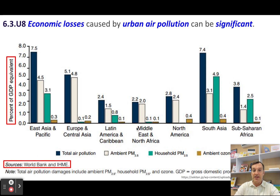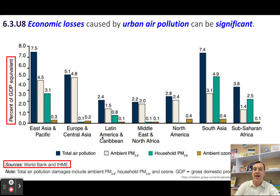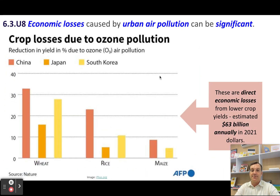The Middle East and North Africa is significantly lower. Latin America and the Caribbean also significantly lower. These are smaller land masses — islands have good horizontal air movement because of their proximity to the oceans. Now looking at economic losses...